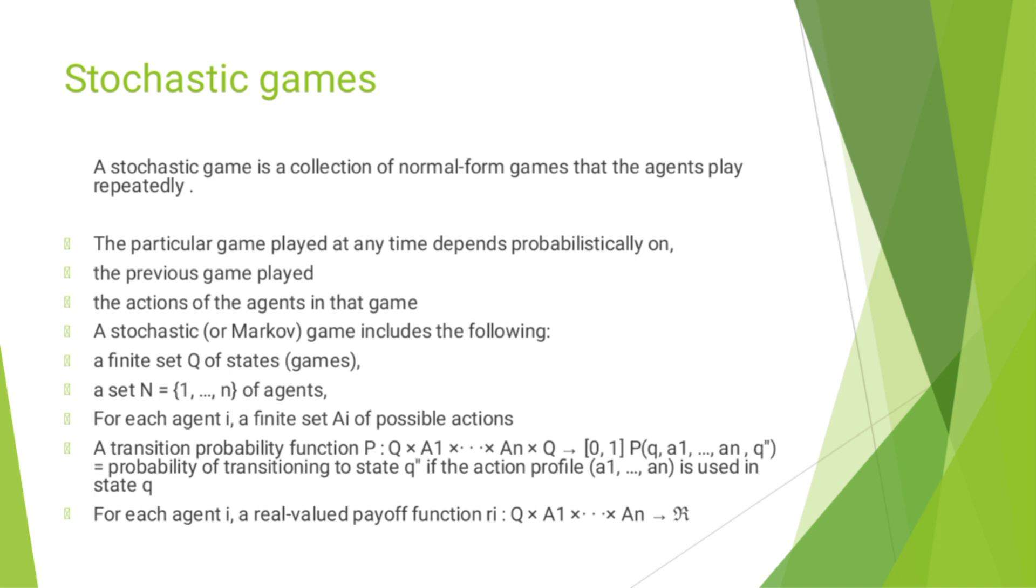A transition probability function P: Q × A1 × ... × An → [0, 1] for transitioning to state q' if the action profile (a1, ..., an) is used in state q. For each agent i, a real valued payoff function Ri: Q × A1 × ... × An → ℝ.